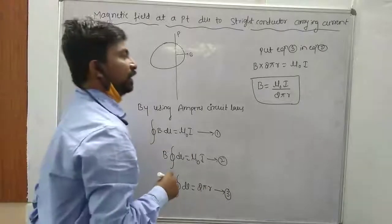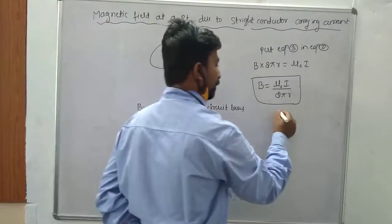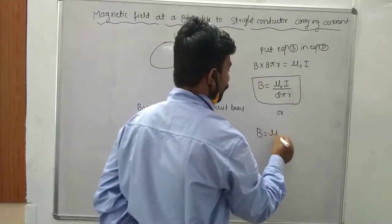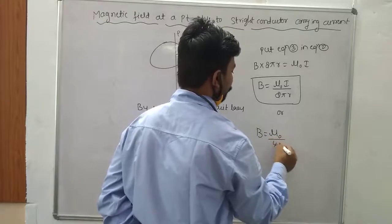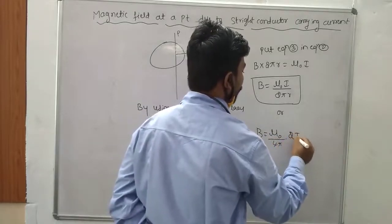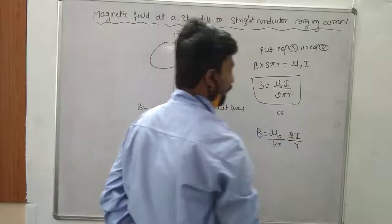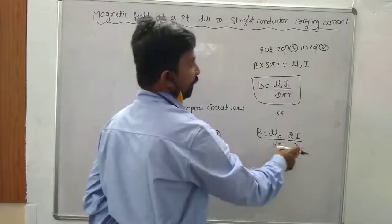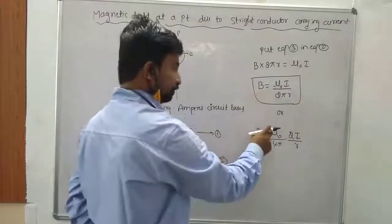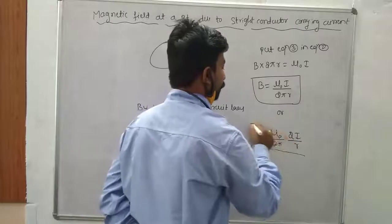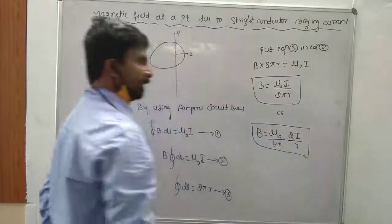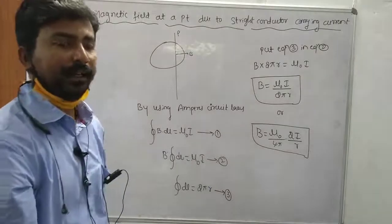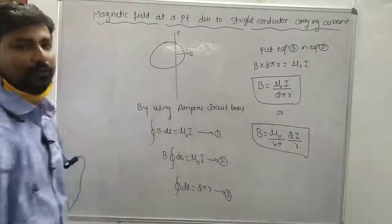So this is the derived expression for the magnetic field at a point due to a straight conductor carrying a current: B is equal to mu naught i divided by 2πr, using Ampere's Circuit Law.